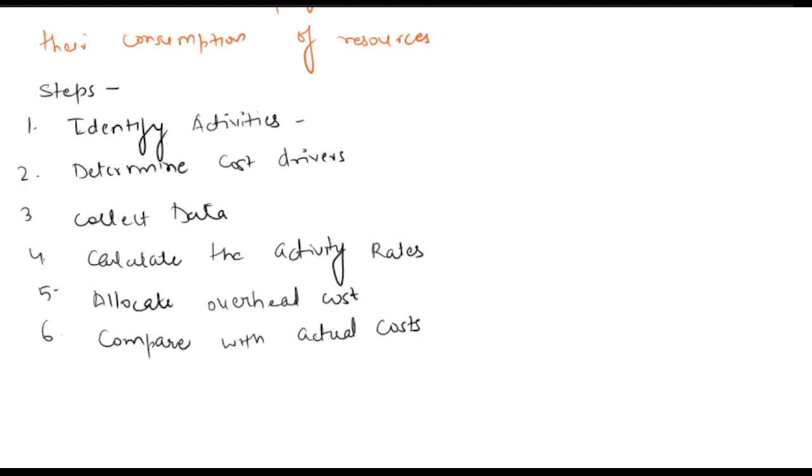By implementing an ABC approach, Wagner Printers can gain a better understanding of actual costs associated with each job and make more accurate pricing decisions. This will help ensure that existing prices cover costs and improve overall profitability.